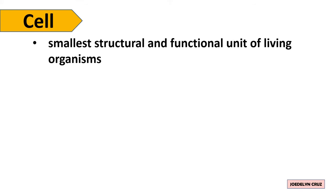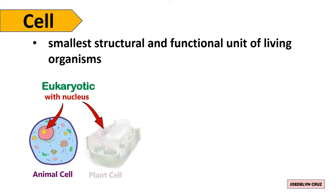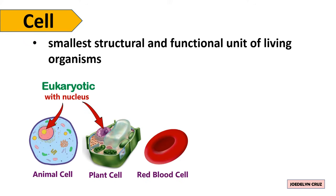Cell is the smallest structural and functional unit of living organisms. It can be eukaryotic cell that contains nucleus, like animal cell, plant cell, red blood cell, sperm cell, and egg cell.